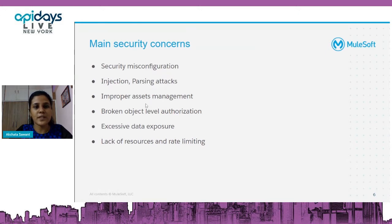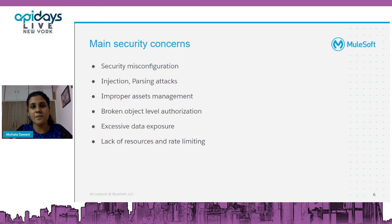There could also be broken object level authorization — something like OAuth or whatever identity management or access management we're configuring. There could be some leaks in that and hackers might take advantage of those gaps as well.